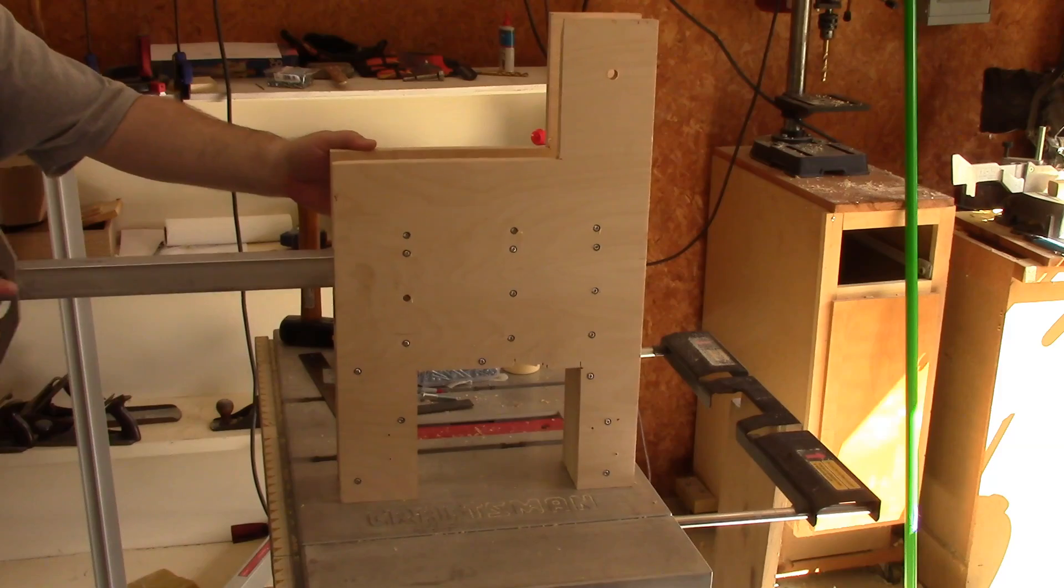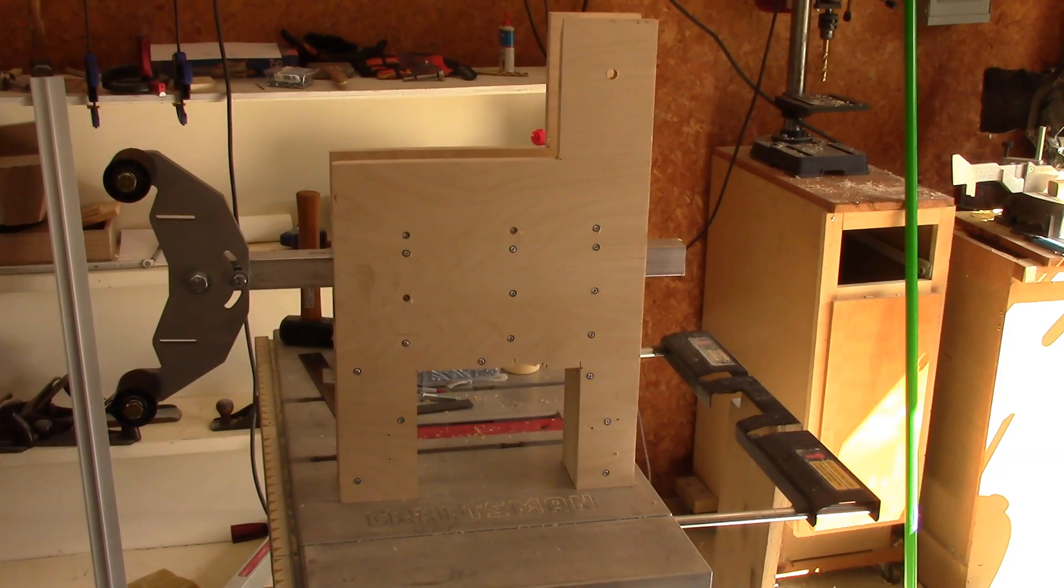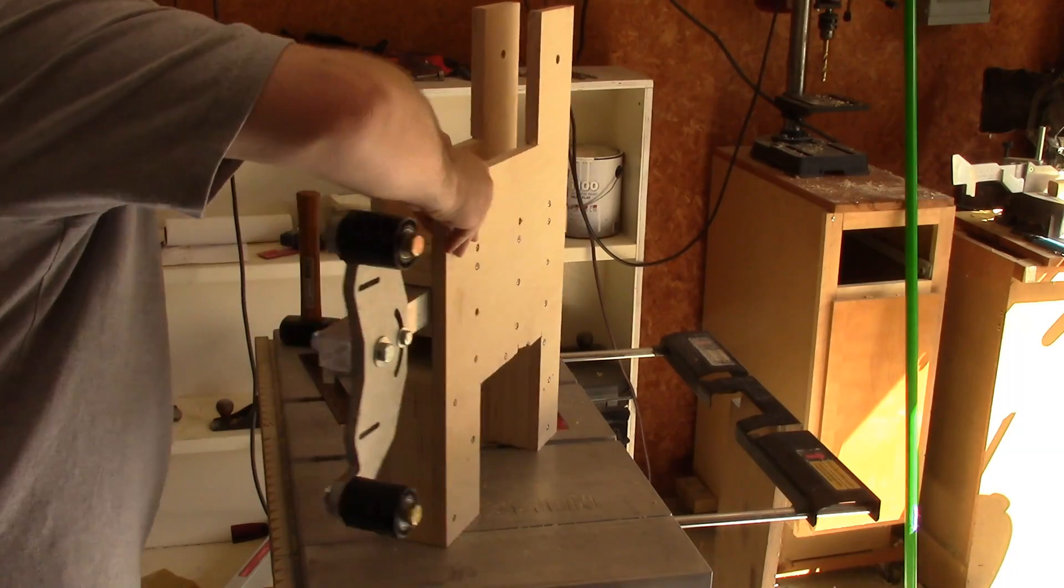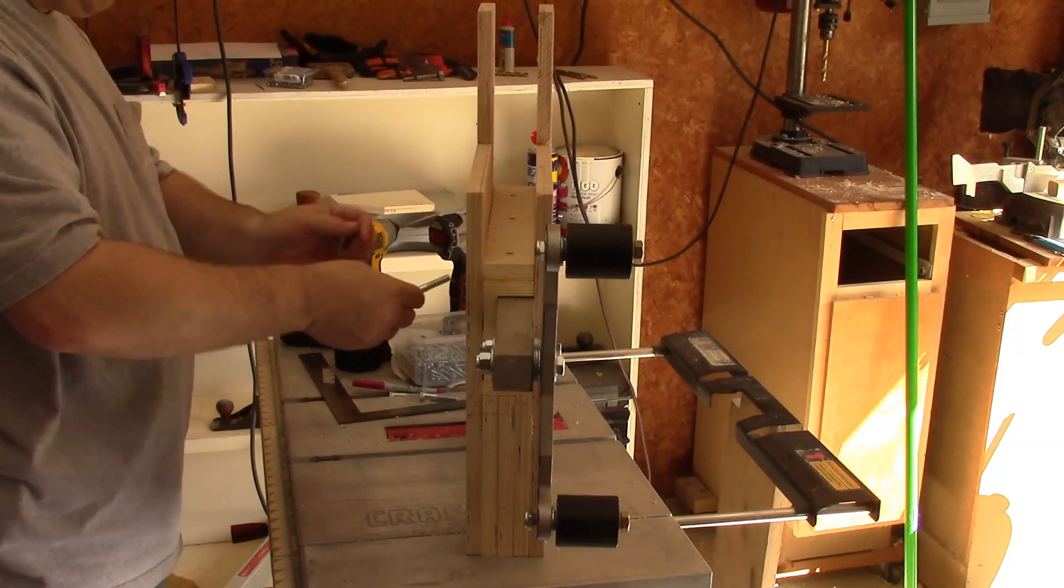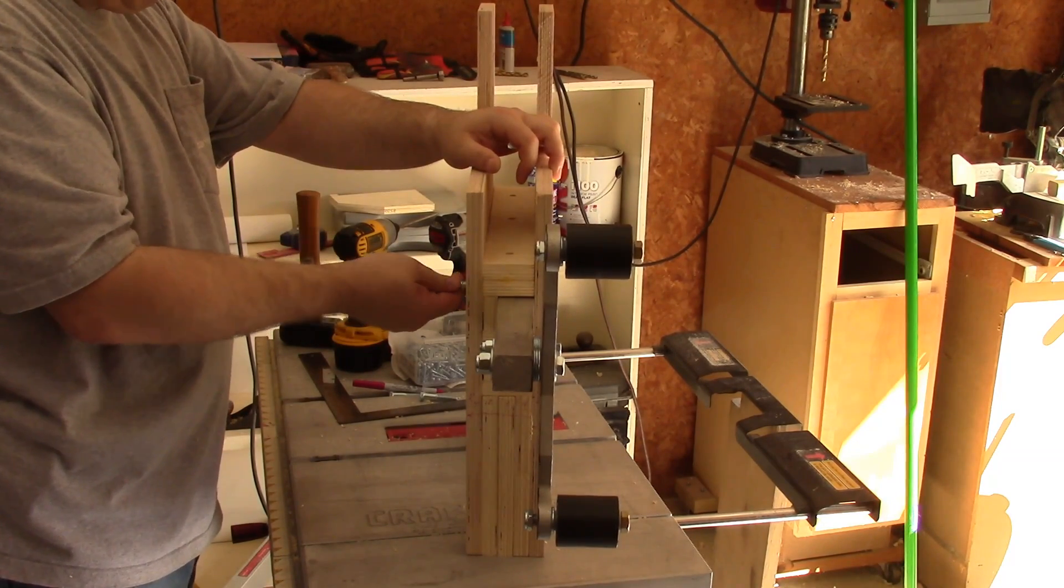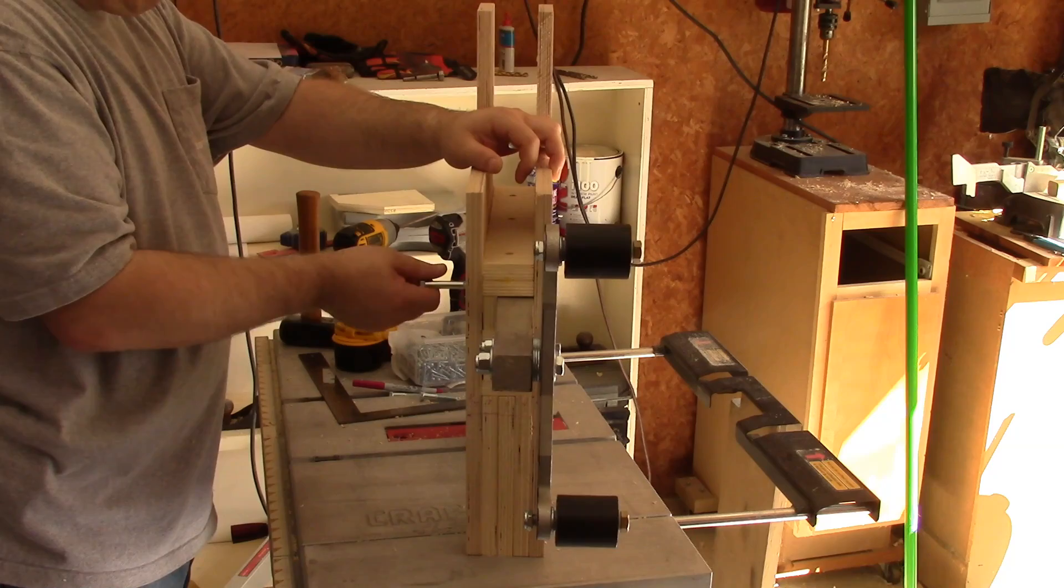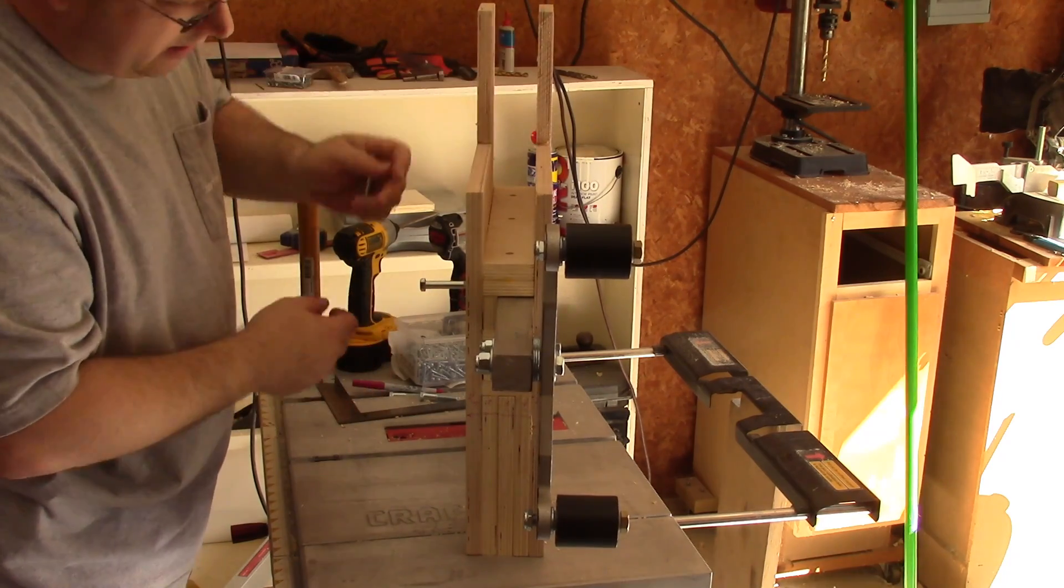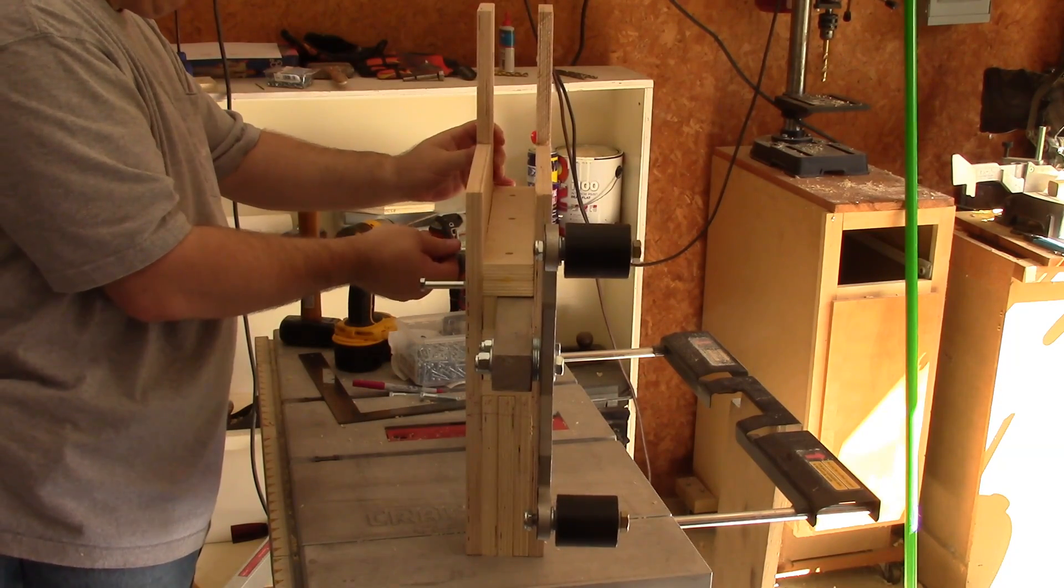I'm just doing a quick test fit of the attachment arm. These 3/8 bolts are screwing into the T-nuts in the floating spacers and they lock in the attachment arm so that it can't move.